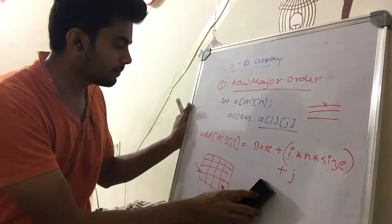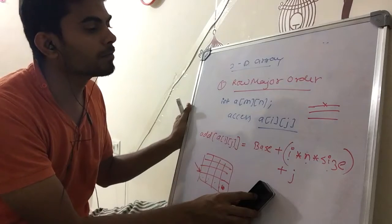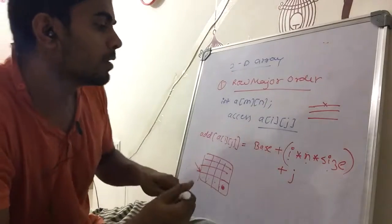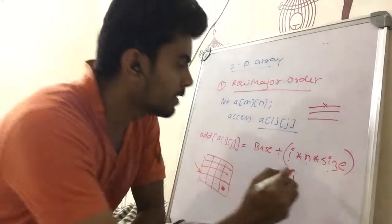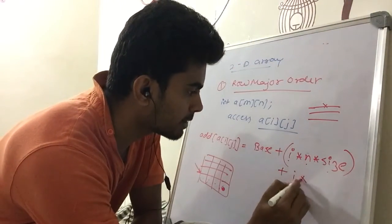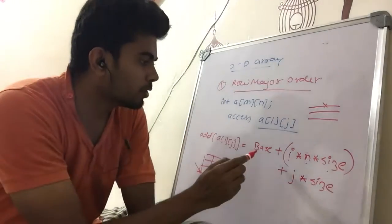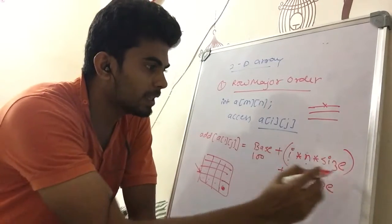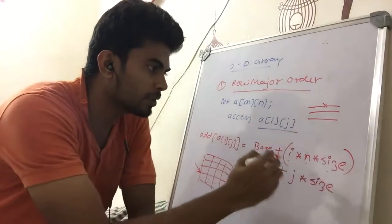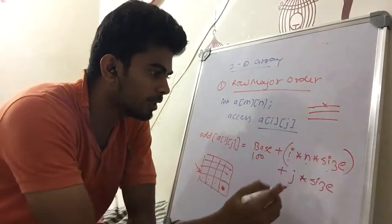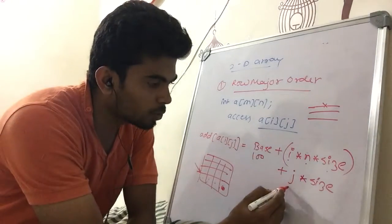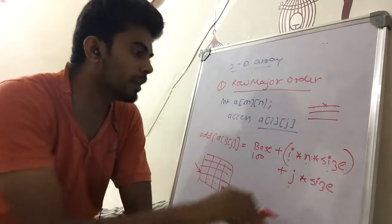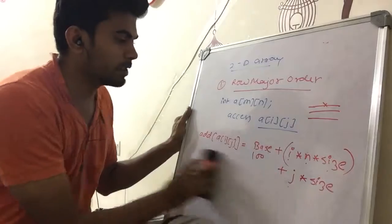So the base address was, say, 100. To that we add i×n×size, which represents the bytes skipped by the row offset, and then j×size gives the column offset to reach the final location. This completes the row major order formula.